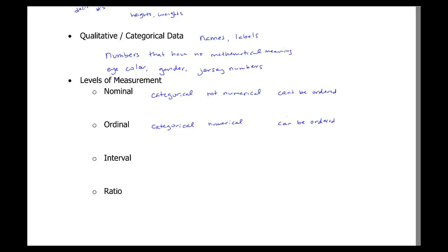An example of a nominal variable would be gender and eye color from our qualitative or categorical variables. And an example of ordinal would be jersey numbers. And another example of ordinal could be ranks. So if you had ordered something from one to ten, best to worst, you could put those in order.